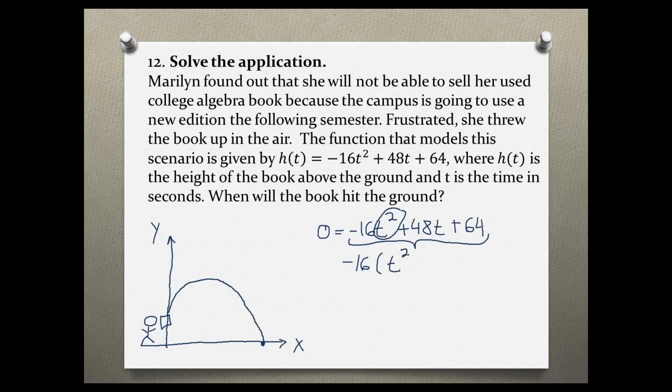Now we have t squared minus, because a positive divided by a negative gives me a negative, and then 48 divided by 16 gives me 3t. Also the sign changes when I divide by negative, I get a negative, and then 64 divided by 16 is 4.